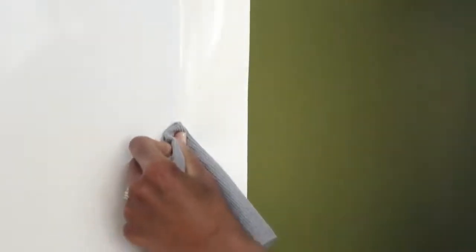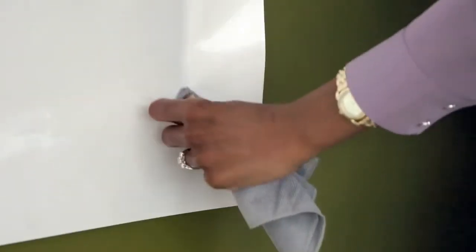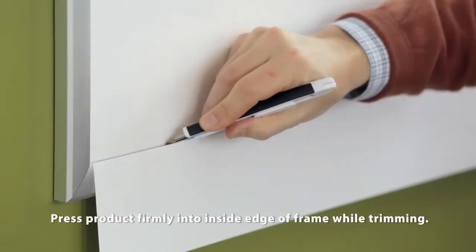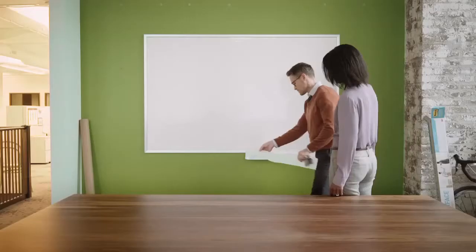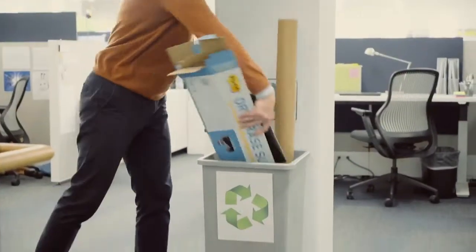Continue by peeling back 12 inches from the liner at a time, smoothing to remove additional air bubbles along the way. Finish by trimming any excess film with a utility knife, then recycle the liner and box.